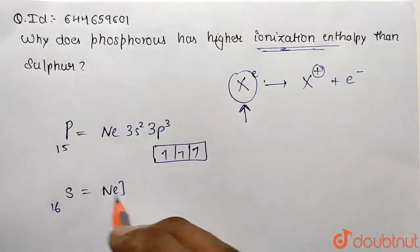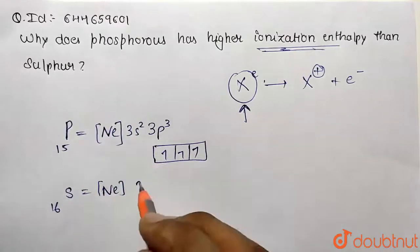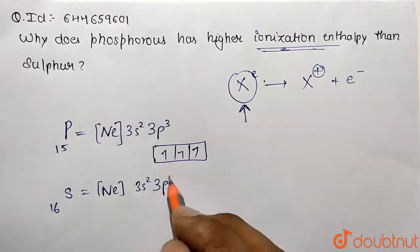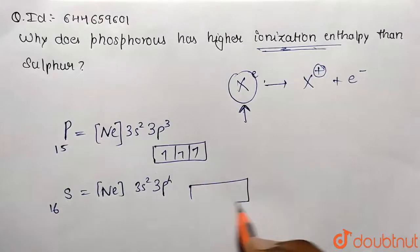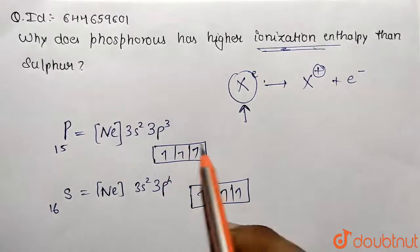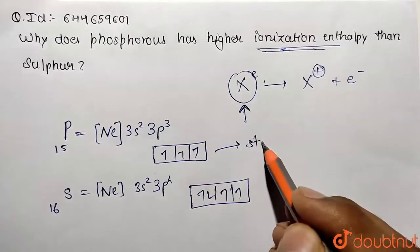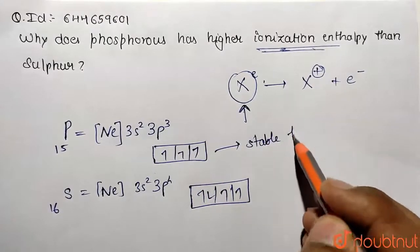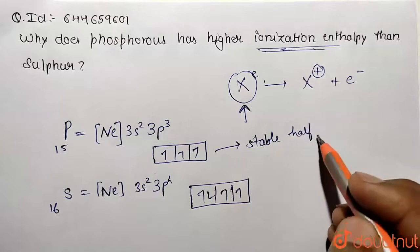So it's going to be [Ne] correspondingly 3s² and 3p⁴. So basically it is having one more electron in the p orbital, so 1, 2, 3 and 4 over here. This is stable half filled electronic configuration.